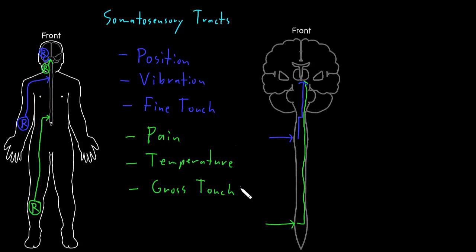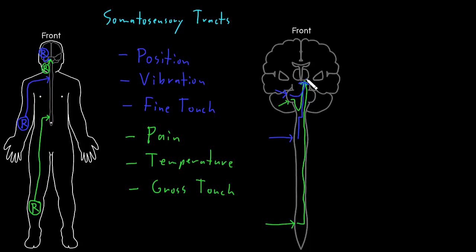Pain, temperature, and gross touch sense from the face and other parts of the head enter the brainstem through cranial nerves, and then take a pathway that actually goes down first, then crosses, and then goes up to approximately the same destination as information from the rest of the body. Similarly, position sense, vibration sense, and fine touch sense from the face and head also enter through cranial nerves, cross to the other side, and travel to approximately the same deep region of the cerebral hemisphere.